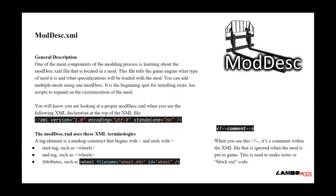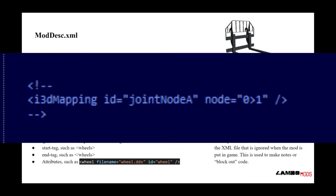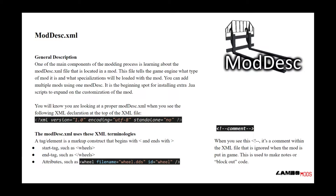A little side note when you're reading code: if you look to the right, it'll say comment, but it is blocked out with an exclamation point and a few dashes. When you see this, it's a comment within the XML file that is ignored when the mod is put in game. This can be used to make notes or block out code for testing.